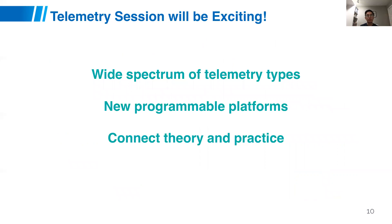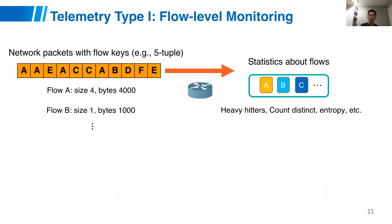Given all these new trends, this year's telemetry session comprises a set of very interesting papers that cover a wide spectrum of telemetry types, exploring new programmable platforms while trying to give new insights by connecting theory and practice. The first telemetry type the papers will cover is flow-level monitoring. Flow-level monitoring means given a stream of network packets, each packet associated with some flow key — like a five-tuple or source IP, destination IP — you aggregate all traffic into different flows like flow A, flow B, with different sizes.